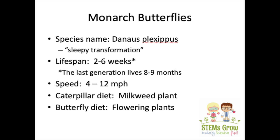Their lifespan is really anywhere from two to six weeks as a butterfly, although the last generation of the season will go and migrate down to a warmer climate so that it can survive the winter months. And that particular generation can survive for up to eight to nine months.